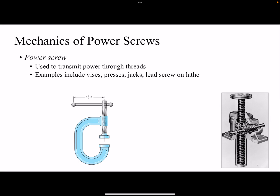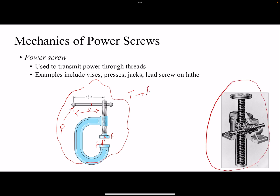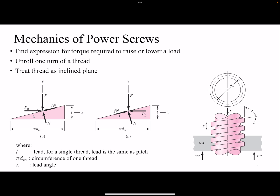In this video we're going to talk about the mechanics of power screws. Power screws transmit power through threads. An example could be a clamp, where we apply a clamping force F. By applying force to the handle, it creates a torque based on the distance, and that torque creates the clamping force. Another example could be a jack press for lifting a load, where we can lower or raise the load. Here we are transmitting power, which means we are dealing with torque in addition to velocity.